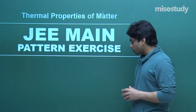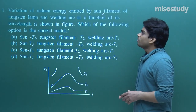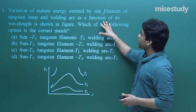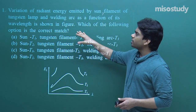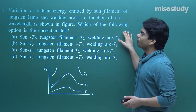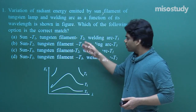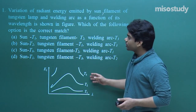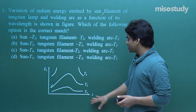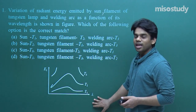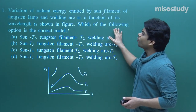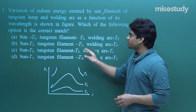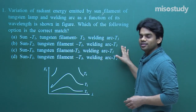Let us go with the first question of the day. The question asks about the variation of radiant energy emitted by the sun, a filament of a tungsten lamp, and a welding arc as a function of wavelength, as shown in a figure. We can see how the variation of radiant energy varies with lambda. Which of the following options is the correct match? Option A: sun T1, tungsten filament T2, welding arc T3.